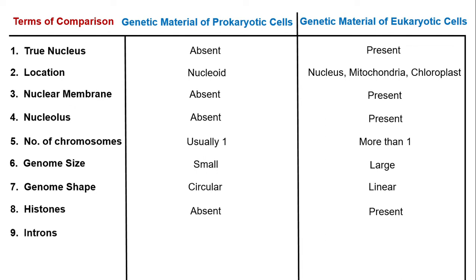The next point is introns. Introns are non-coding portions of DNA — non-coding genes that don't code for any protein products. Introns are usually absent in prokaryotic cells, though exceptions exist such as many archaea which are known to contain introns. Since the majority of prokaryotic cells lack introns, they are listed as absent. In eukaryotic cells, introns are present.